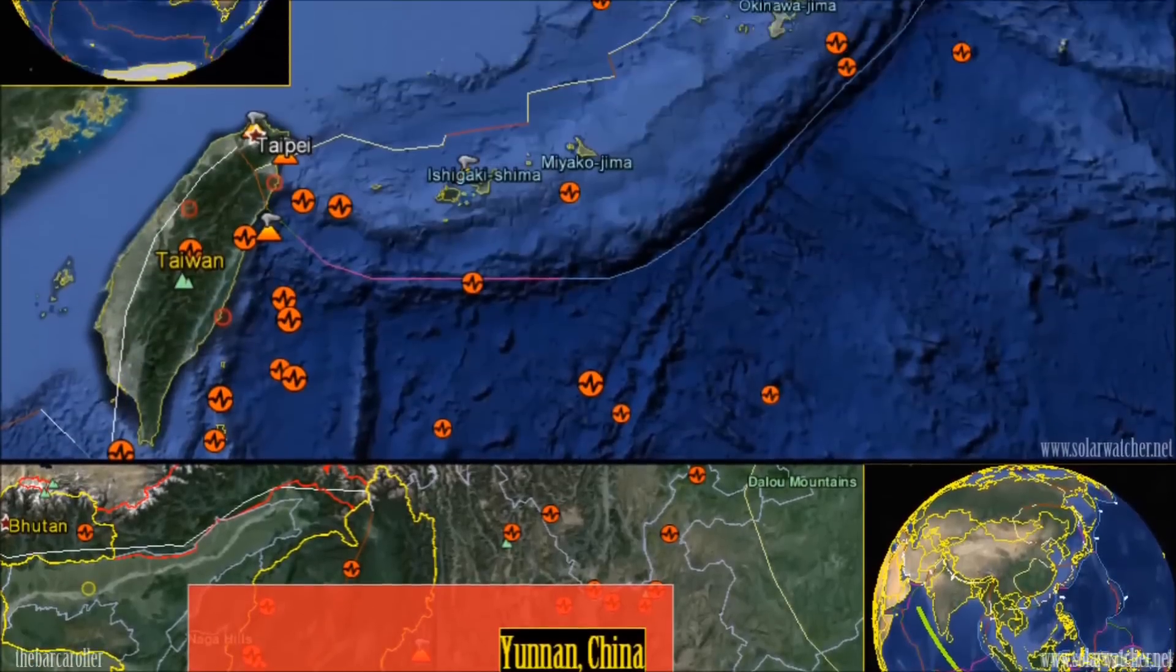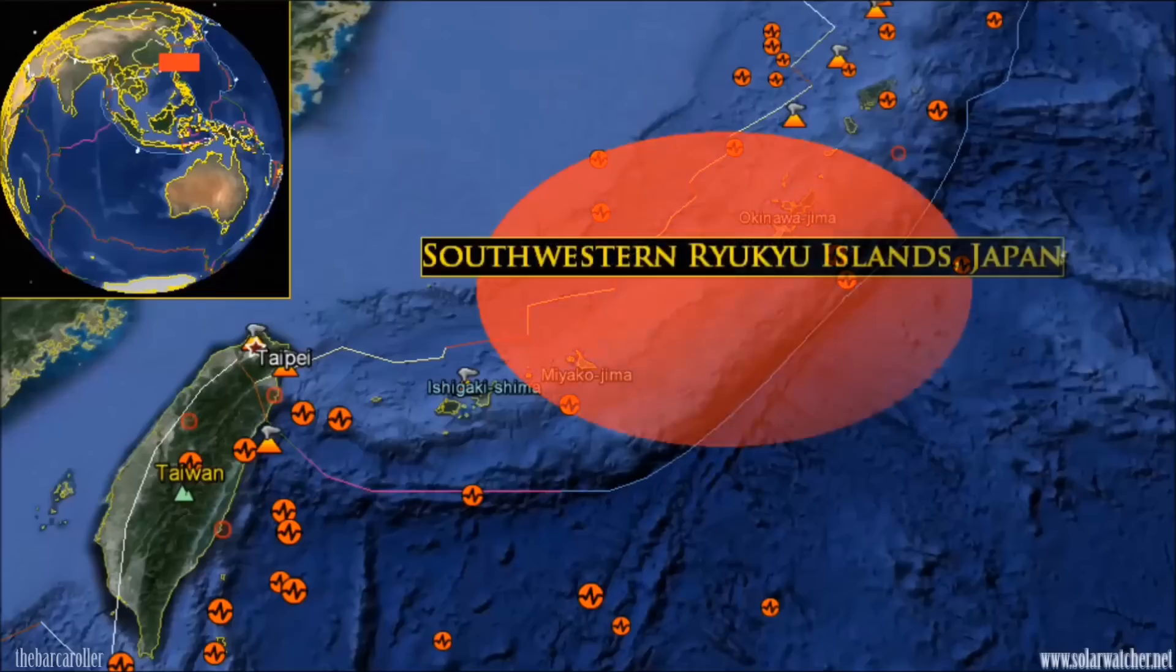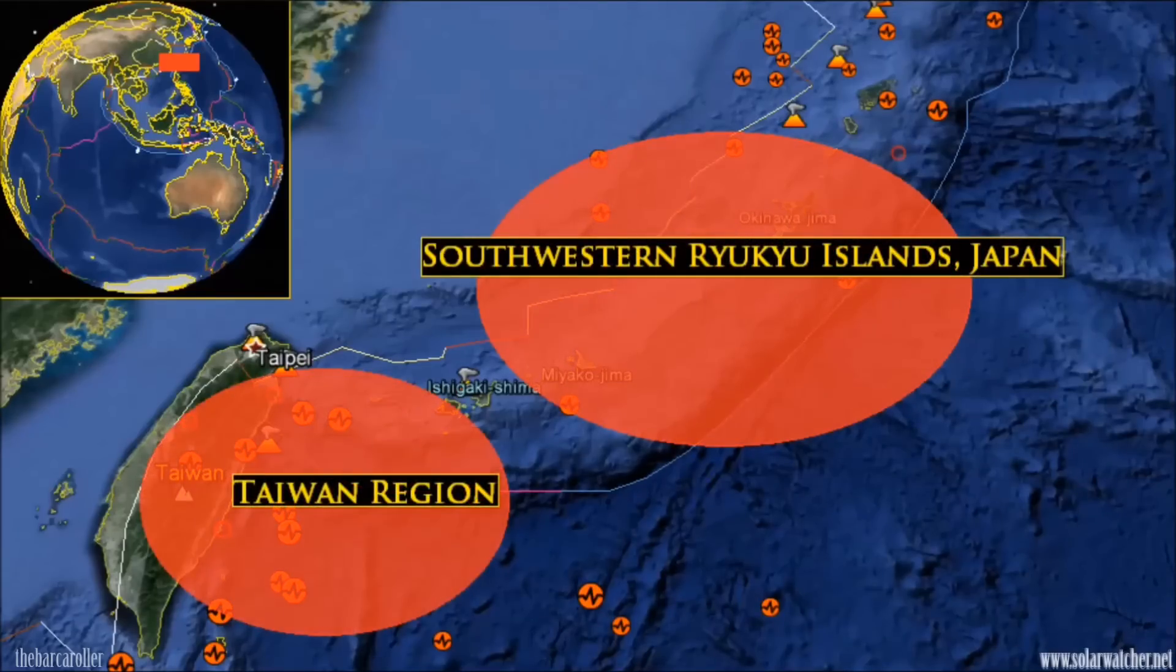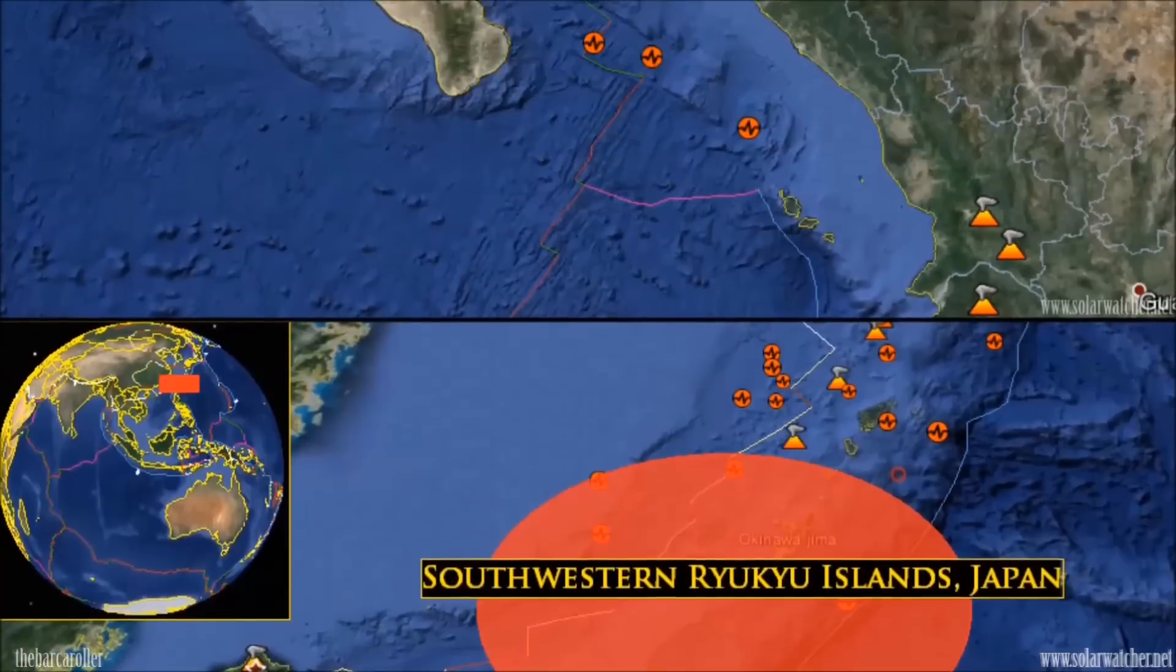The Philippine plate would be the second area of concern for this watch period, specifically isolating the southwestern Ryukyu Islands, Japan region, or further south in the Taiwan region.